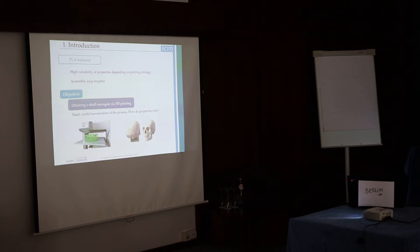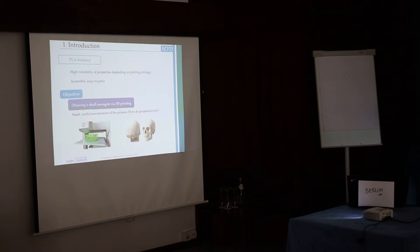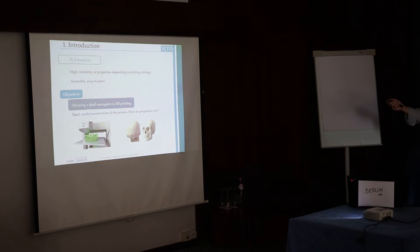The problem, as mentioned earlier, is that PLA material, as any material in 3D printing, has high variability of properties depending on the strategy selected. However, it is very accessible to print and not as expensive as a commercial surrogate would be, so it is still a very interesting possibility. Our objective is to obtain a skull surrogate via 3D printing, to which we will later add the brain mass surrogate, the skin surrogate, etc., to complete the whole head. We need careful examination of how properties will vary depending on which printing strategy we select. Since we need to add the brain mass later, we must select how we print the skull so that we can later fit the mass.